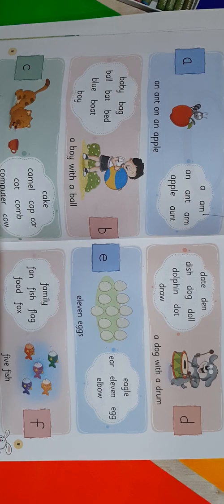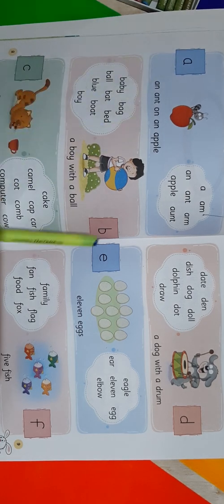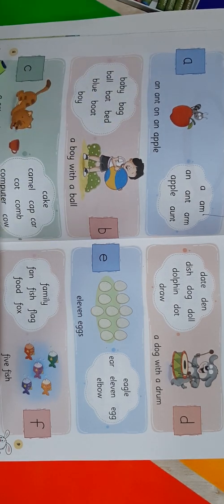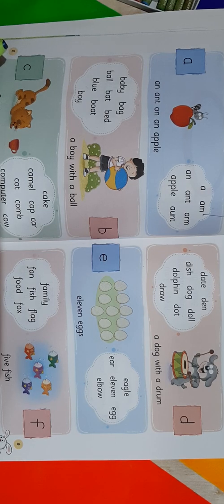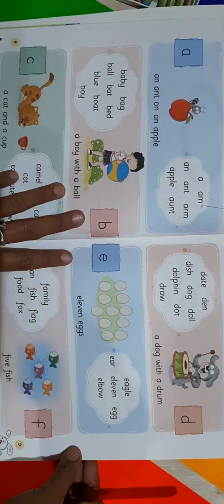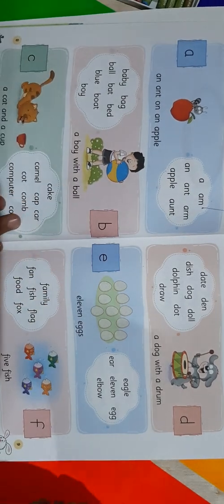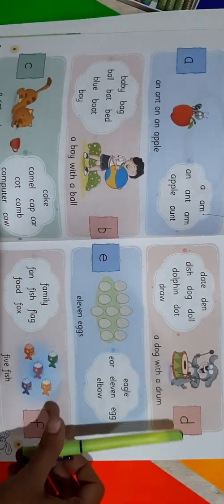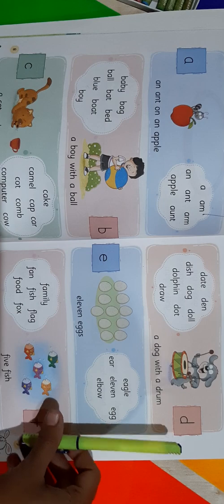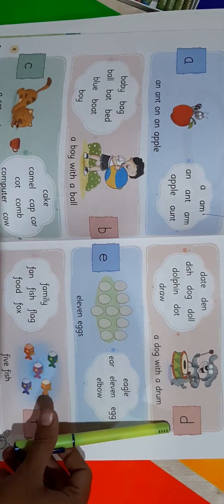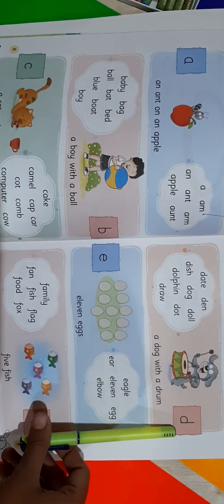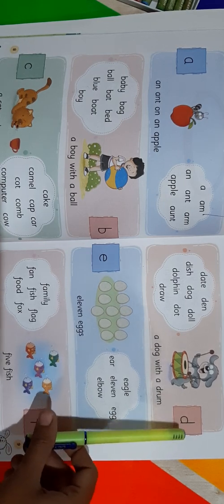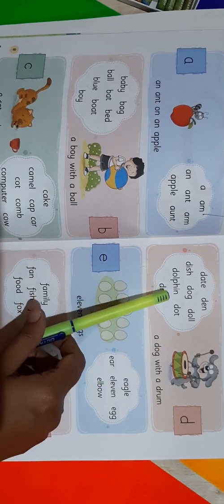In the last session, we read A, B, and C words. Correct? Do you remember that? Great! You are very good and brilliant students. So now our next alphabet is D. What is the next alphabet? D. Let's see a few words starting from D.